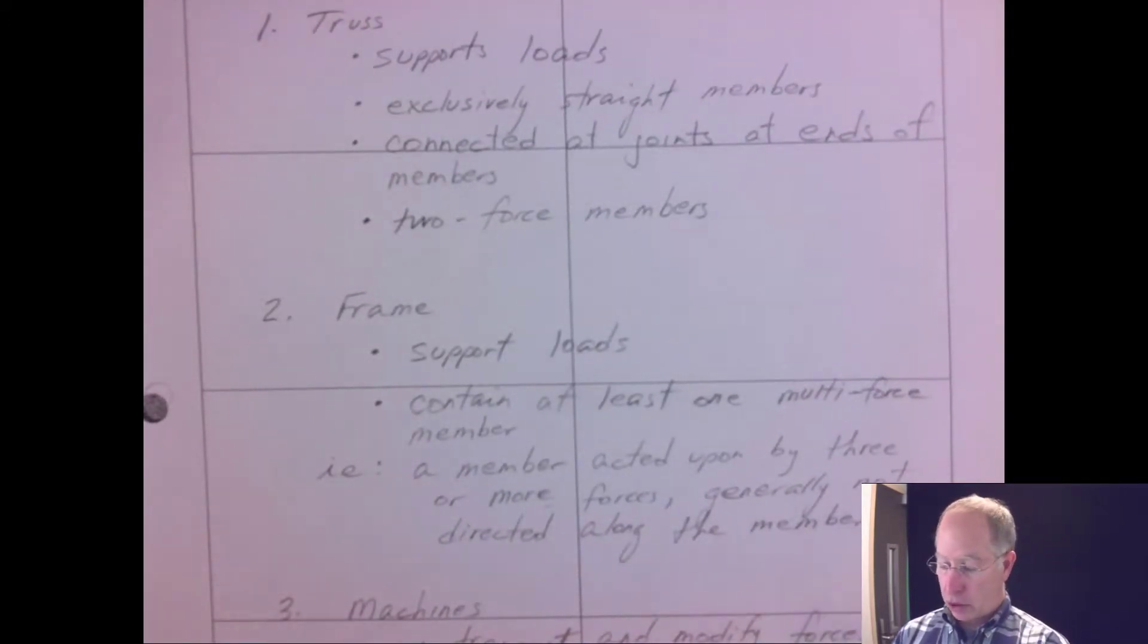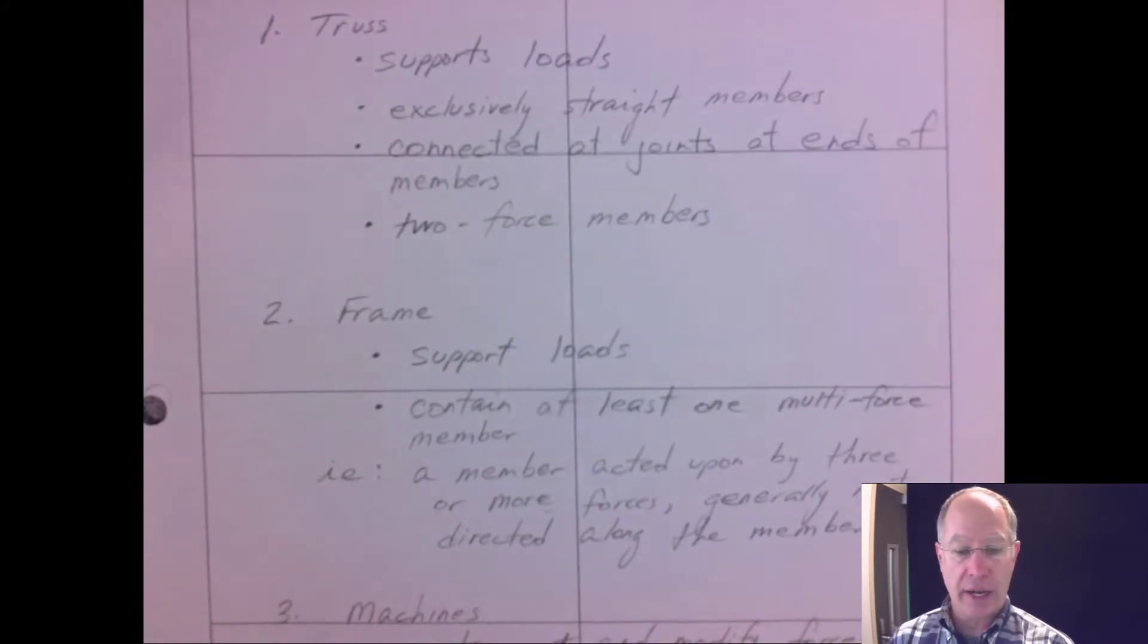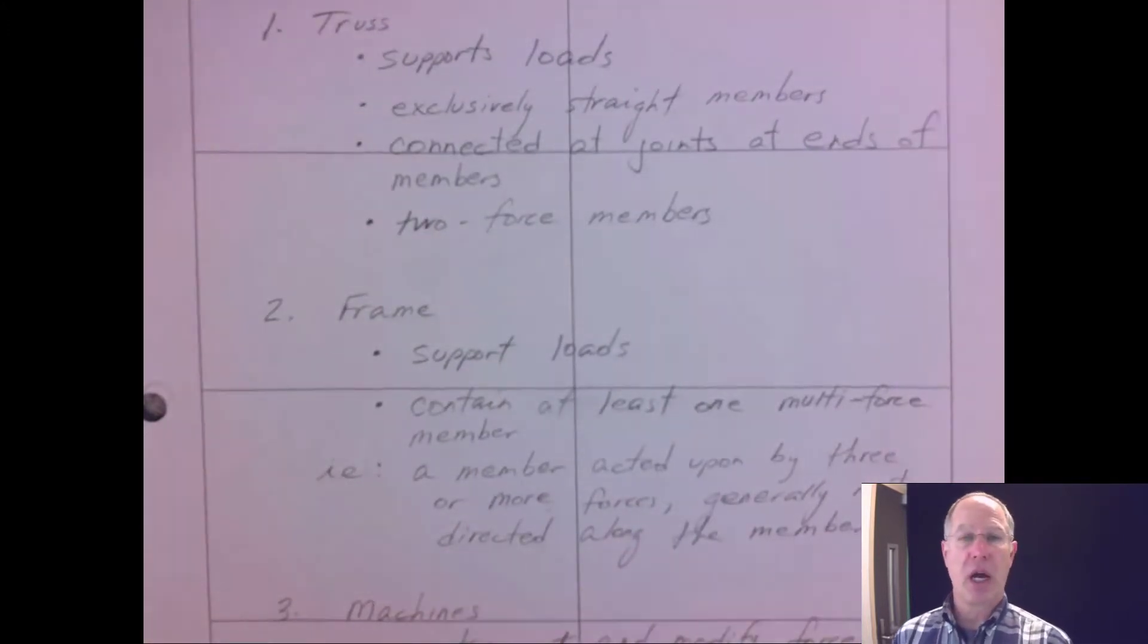A member acted upon by three or more forces, which are generally not directed along the member. Whereas the truss had the line of action of the forces collinear and passing through either end of the member, a multi-force member is not constrained in that way. It can have another force coming in at some midpoint on the member at any angle.